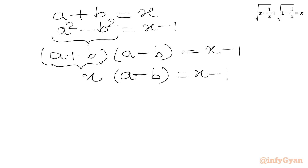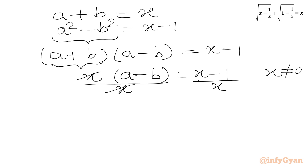As per our equation, x cannot be 0 — the denominator cannot be 0. So we will divide both sides by x, and x will cancel. We get a minus b equal to 1 minus 1 over x.